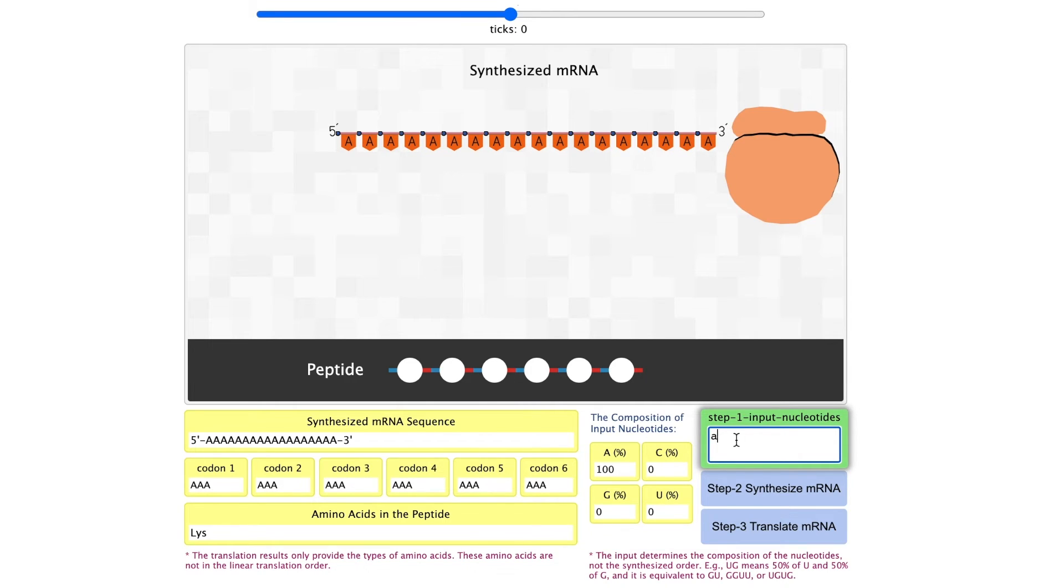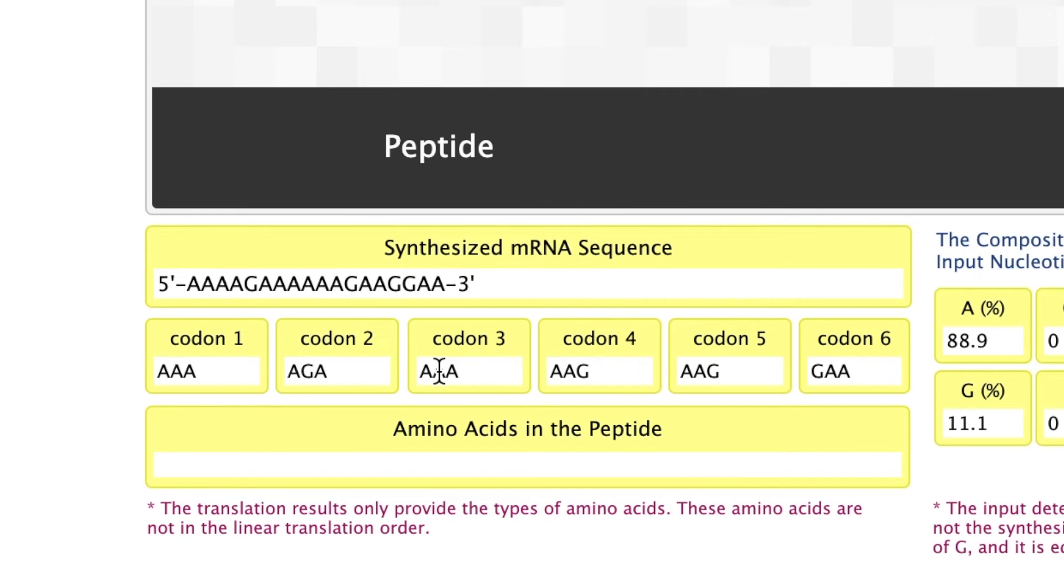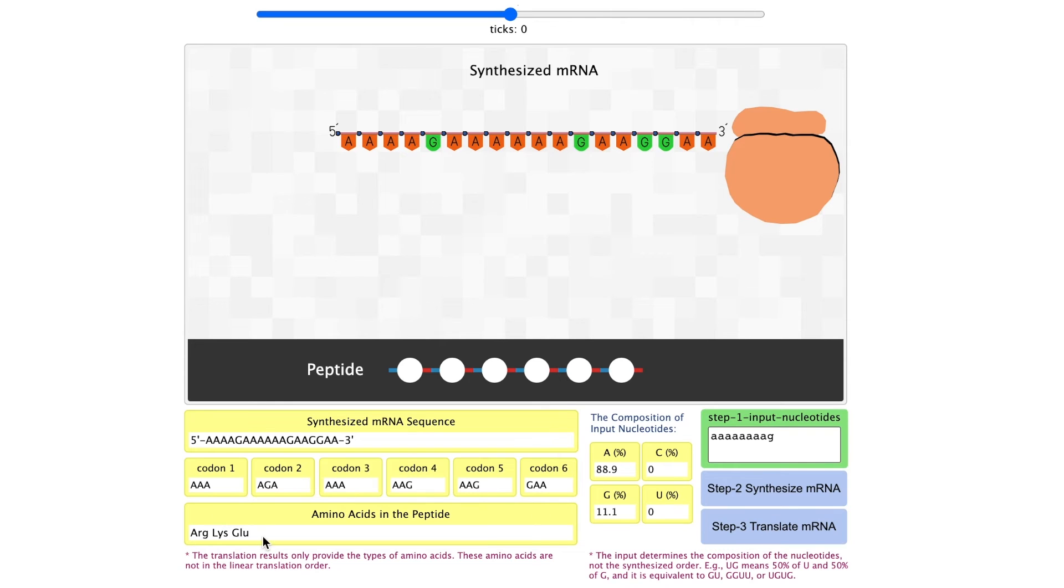They can certainly take advantage of the ratio. For example, put a larger portion of A and smaller portion of G. In this case, we have four different types of codons and we get three types of amino acids incorporated. If we use a more extreme ratio, fewer types of codon will be involved and we get a more conclusive result.